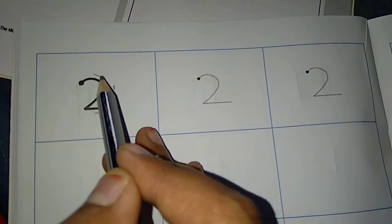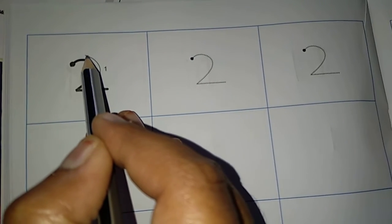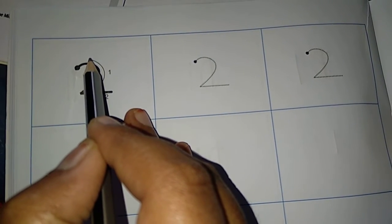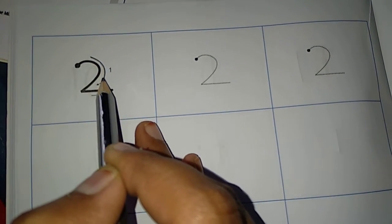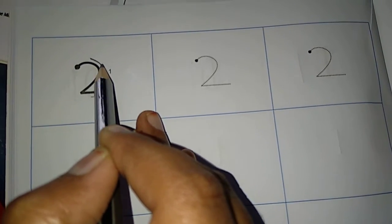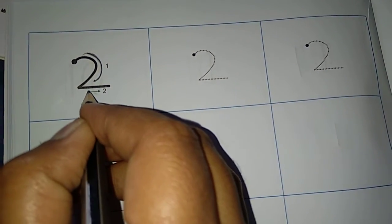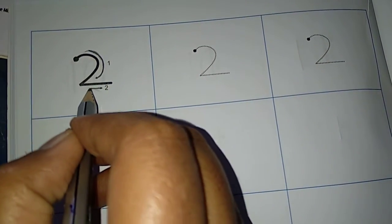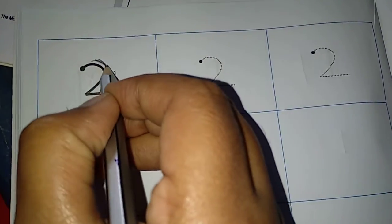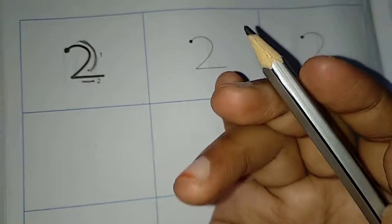First, we have to, see here. First, we have to draw 1 curve, right? Draw 1 curve. And then, here, see. Observe these arrows, children. So you can know how to write.